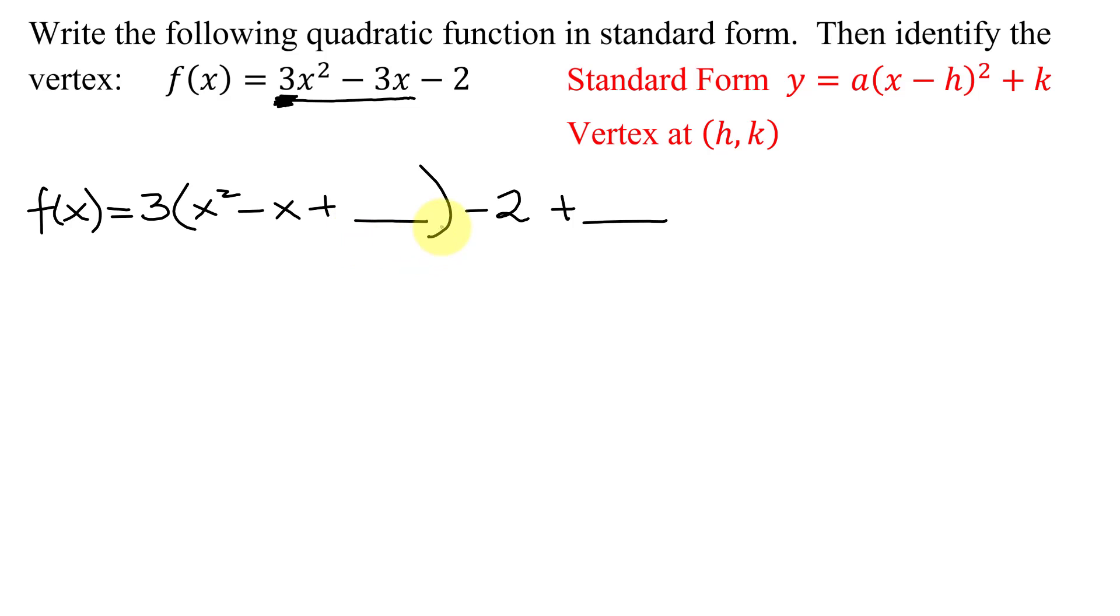So what number do I add here? To find that out, you take the coefficient of the x term, which is -1, divide it by 2. You simplify it if you can. This one doesn't simplify. Then you take that -1/2 and you square it.